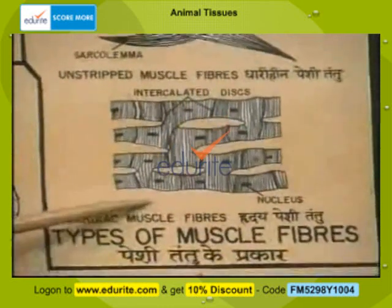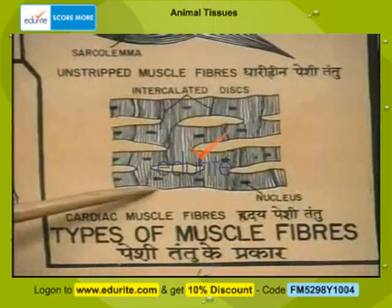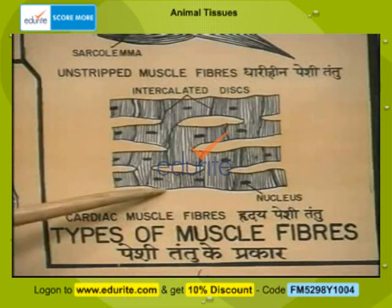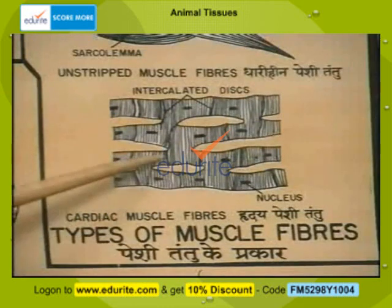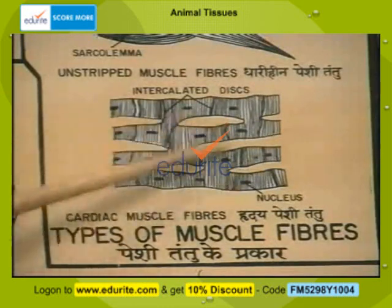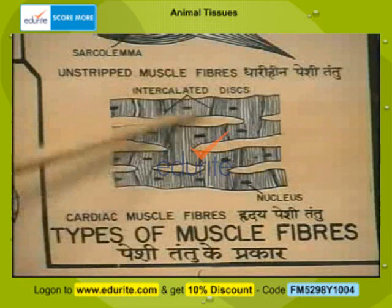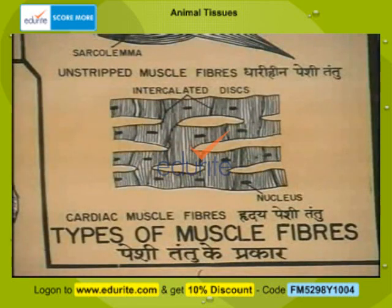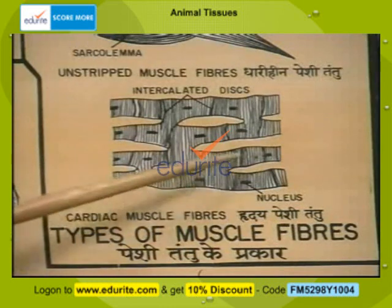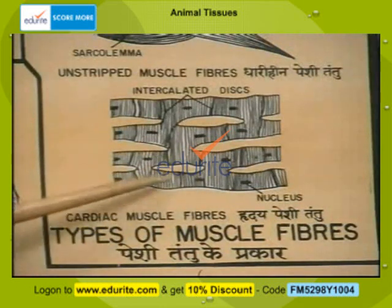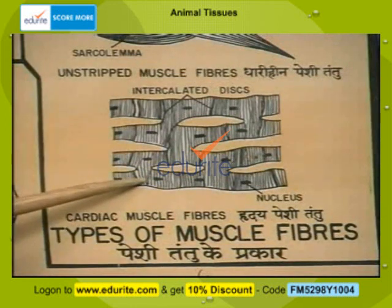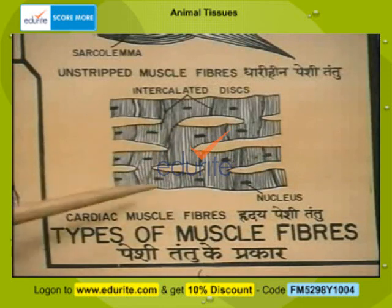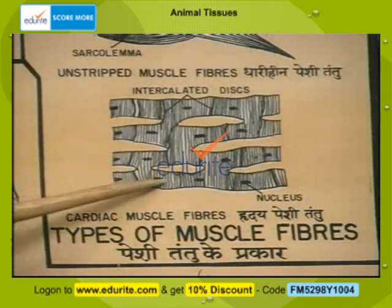Cardiac muscle is a special muscle found only in the heart. It consists of a number of cylindrical fibers that are also interconnected. They also show striations like the striped muscles and have prominent nuclei. They are involuntary in nature. The special nature of cardiac muscle is that it is capable of rhythmic contraction.